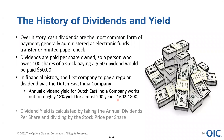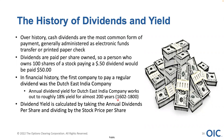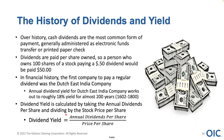The Dutch East India Company eventually was subjected to bankruptcy and had to dissolve, taken over by the Dutch government. The dividend yield is calculated by taking the annual dividends per share and dividing it by the stock price per share. For example, if we have a $100 stock that pays a 50-cent dividend quarterly — that's $2 annually — $2 divided by 100 equals 2%. We would say the dividend yield of this particular stock would be 2%.